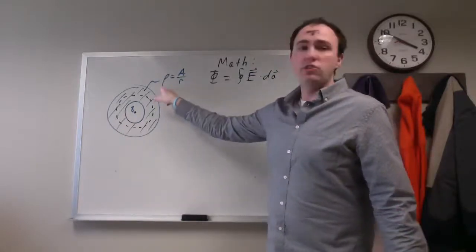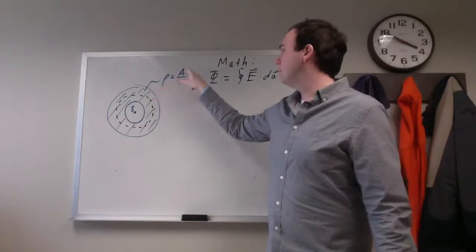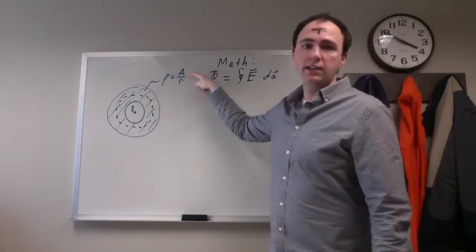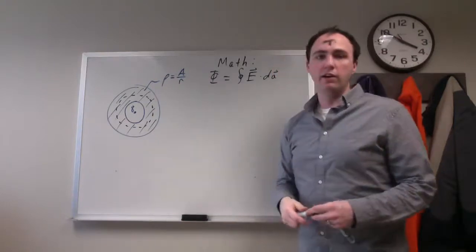you're told that the charge density is equal to some constant a divided by r, the distance that you are from the center.